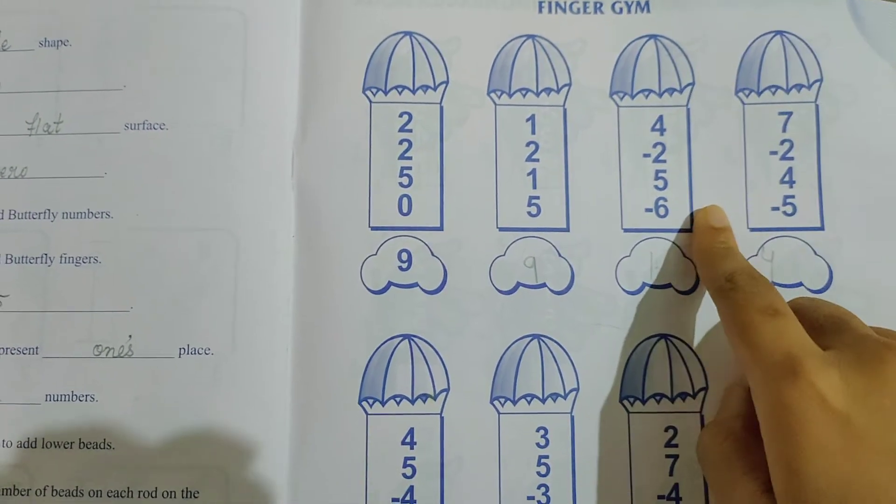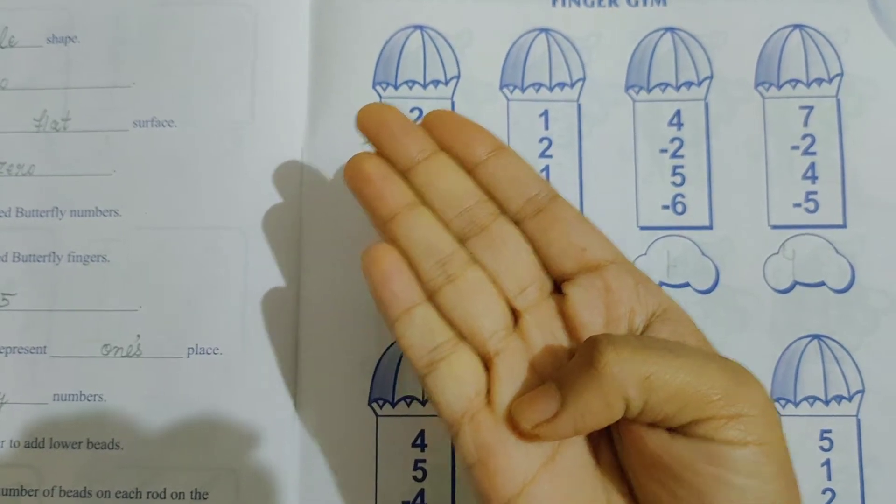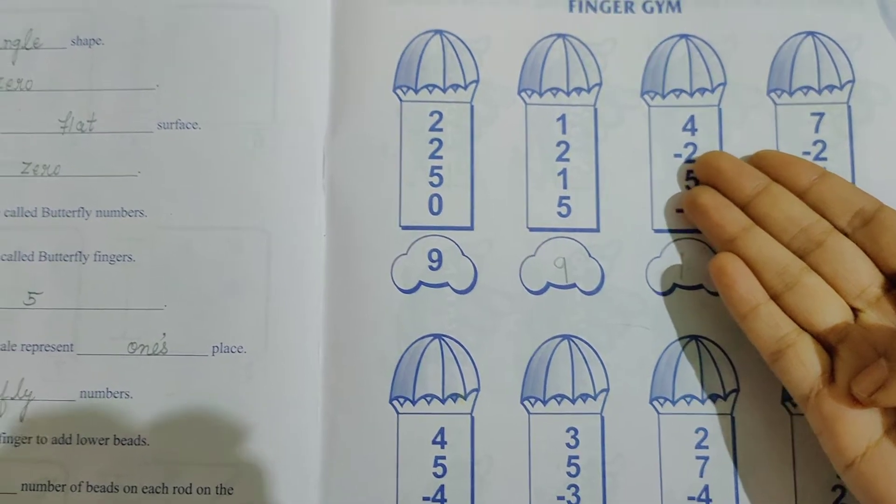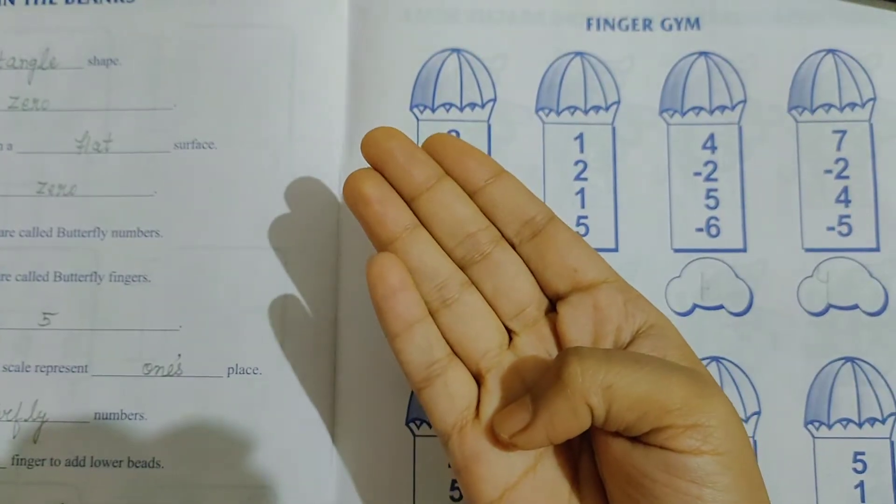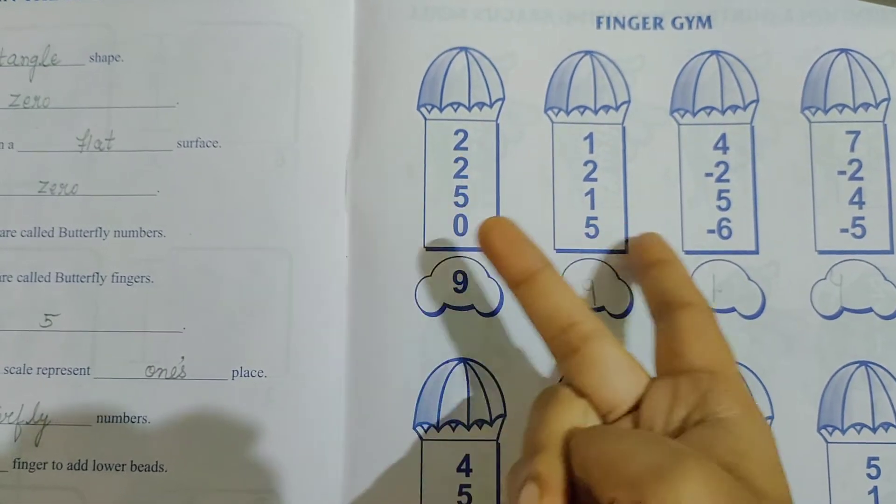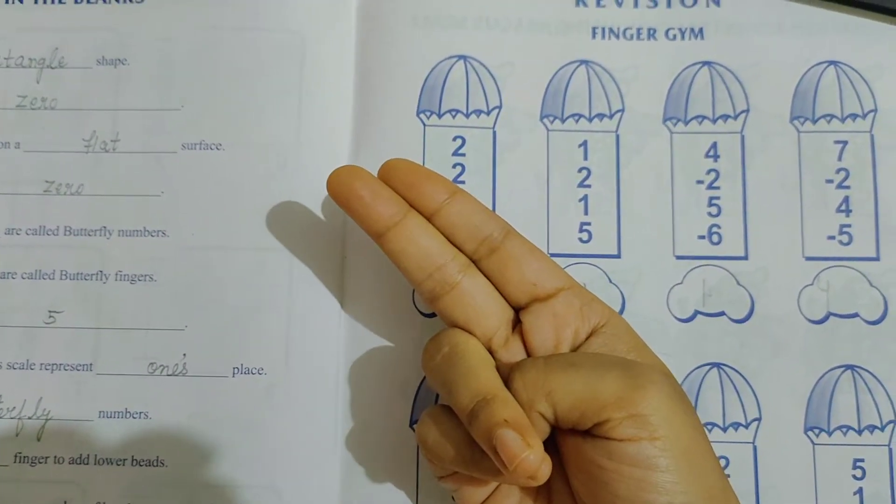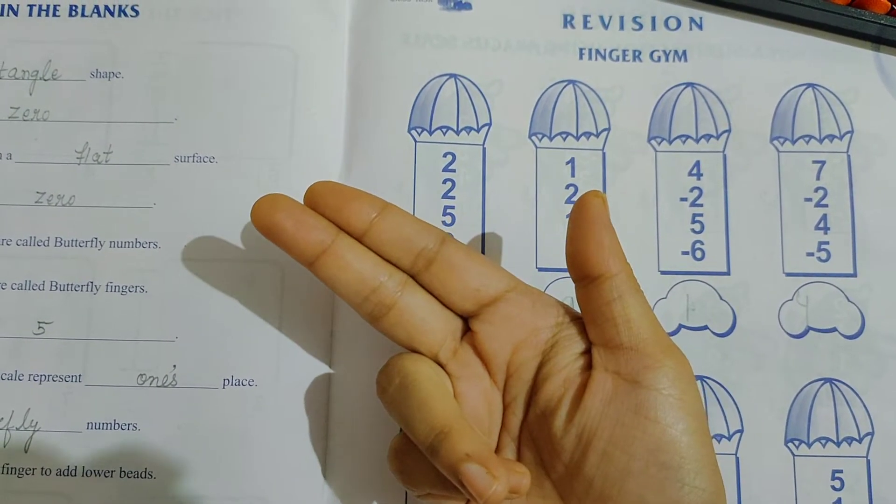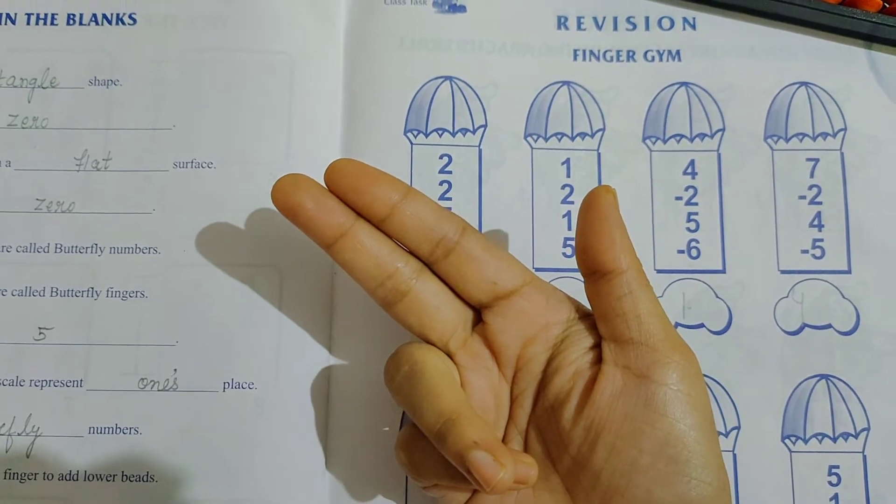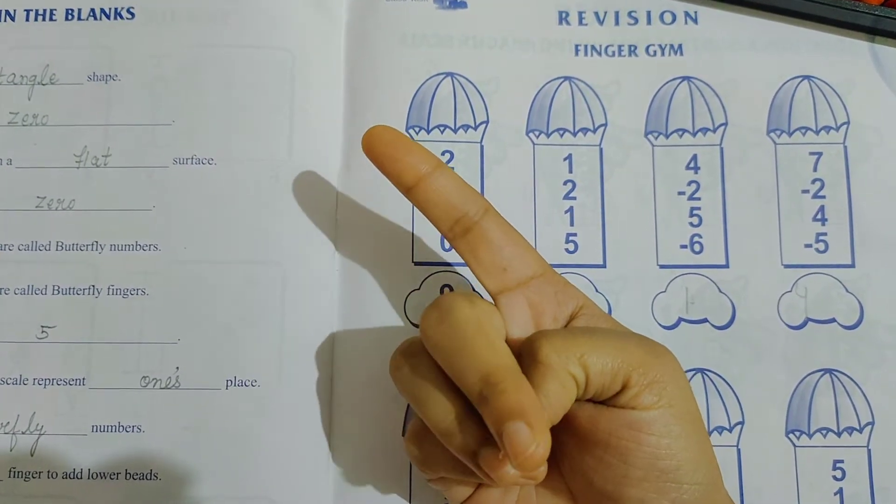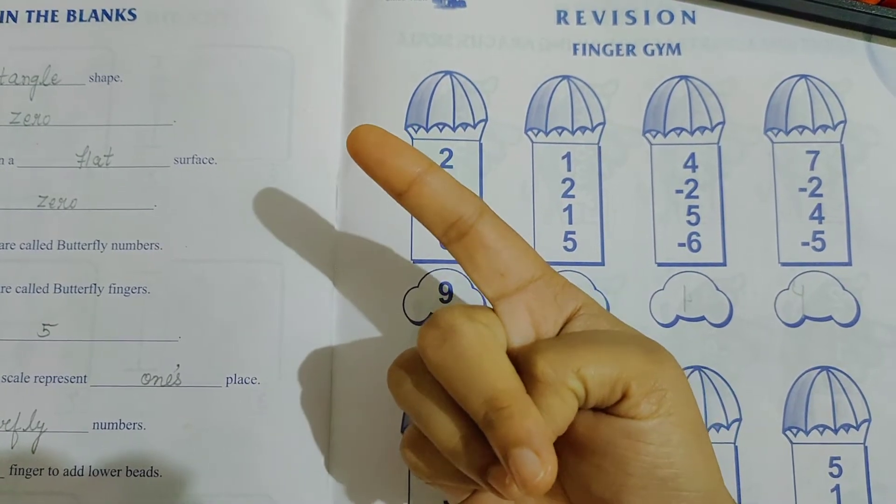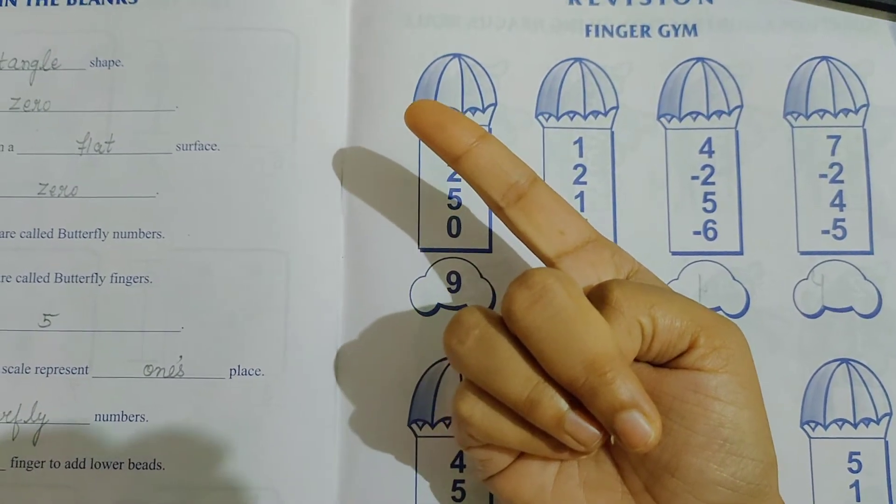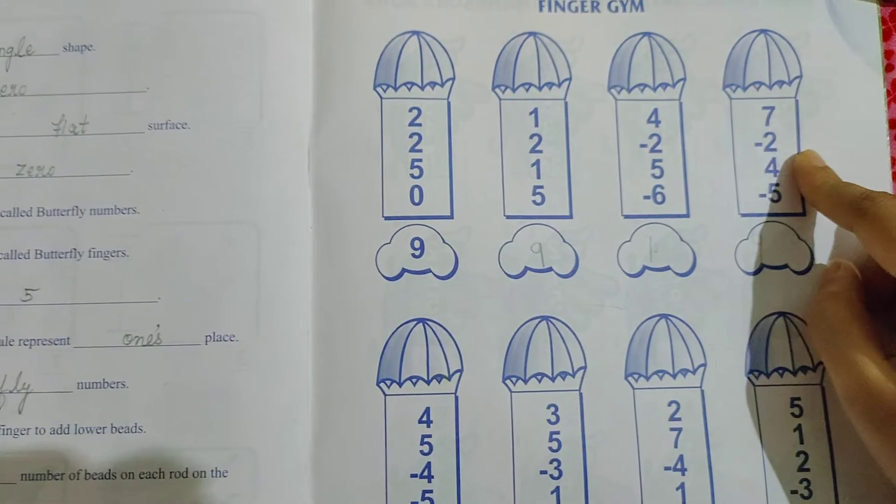Next question 4. Directly you will take 4. Then minus 2. Near 2 minus sign is there means you have to subtract 2. So now you subtract 2 fingers. Now plus 5. Now you have to add 5. So which one is 5 children? Thumb has value 5. So open 5. Now minus 6. So how you will subtract 6? 5, 6. Thumb and 1 finger. That is 6 no? So 5, 6, minus 6. Done. Now the answer is 1.